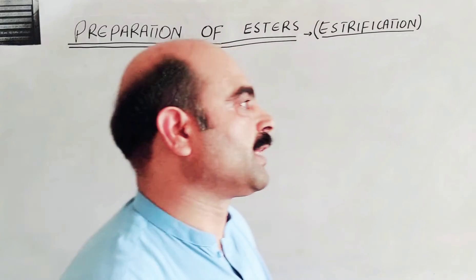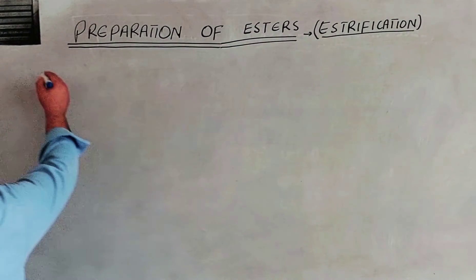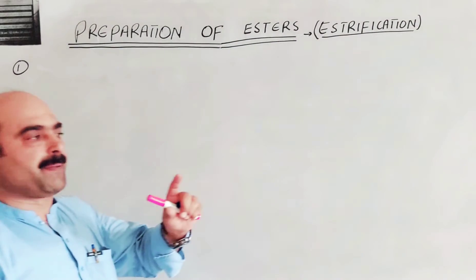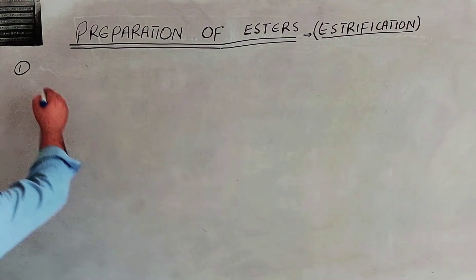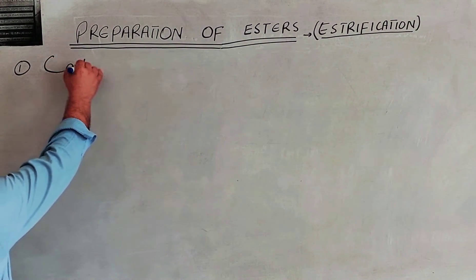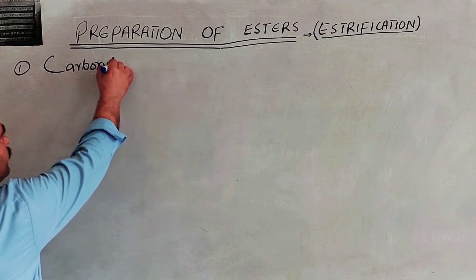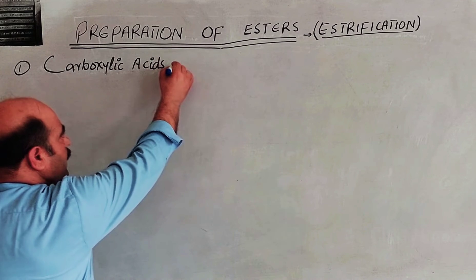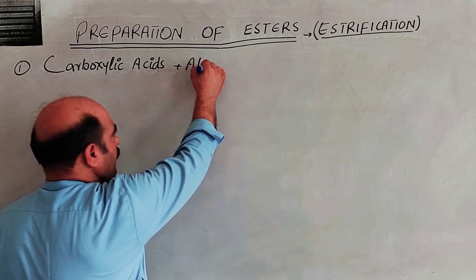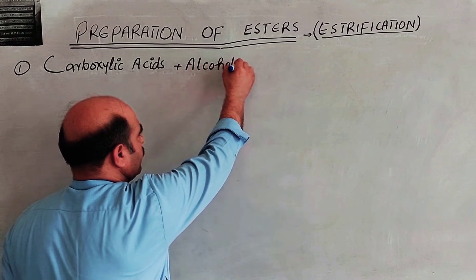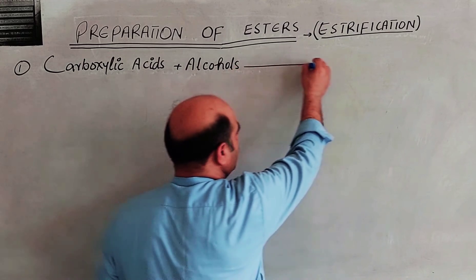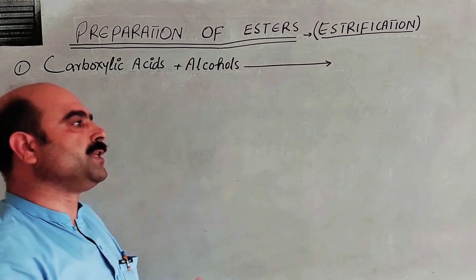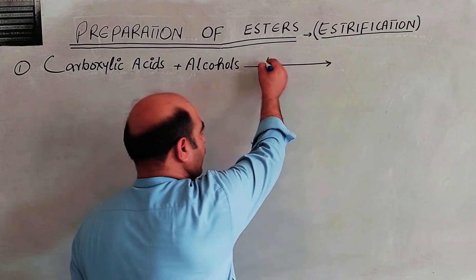Preparation number one from chapter 20 is the preparation of esters. Ester preparation number one involves carboxylic acids and alcohols. Carboxylic acid plus alcohol, with a catalyst, gives the ester product.